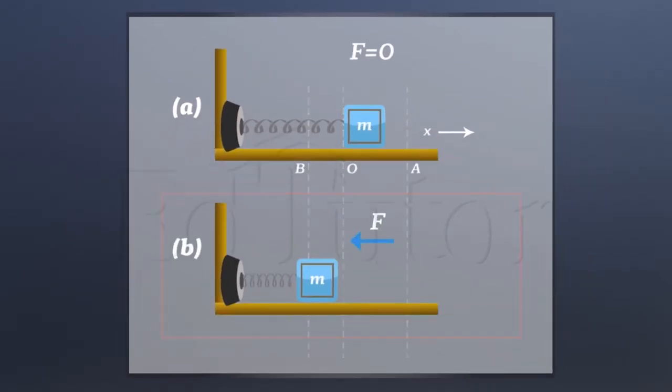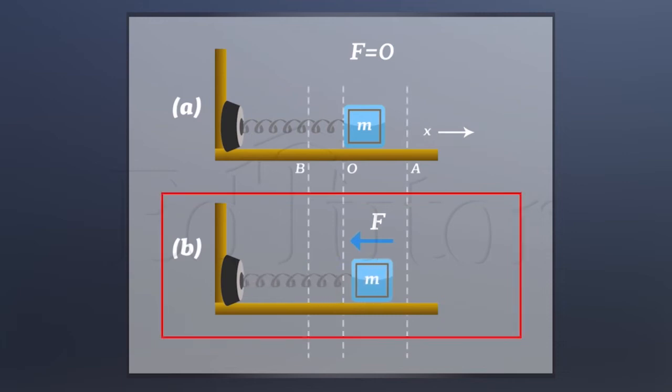Secondly, we look at the extreme positions. The extreme position is the point at which the vibratory body is at its maximum displacement from its mean position. If we take the example of the same figure as shown on this side, you can see that the points A and B are the two extreme positions.